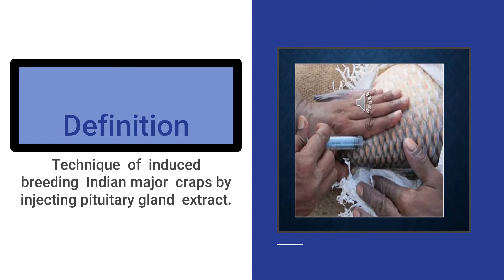When the pituitary gland of the same species of fish is used, the hypophysation is called homoplastic. Induced breeding is practiced in a wide variety of fish species such as catla, silver carp, mrigal, rohu, mola, and other carps.